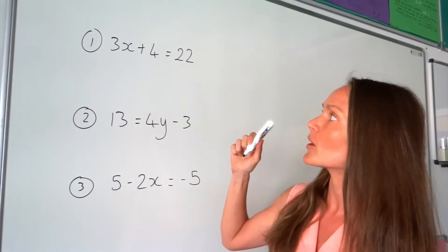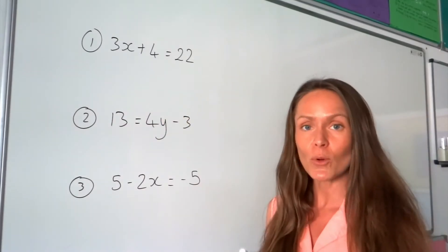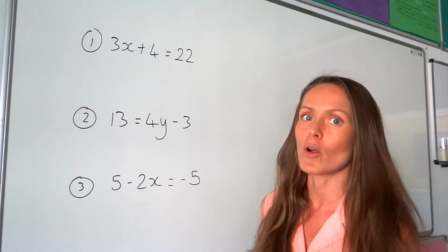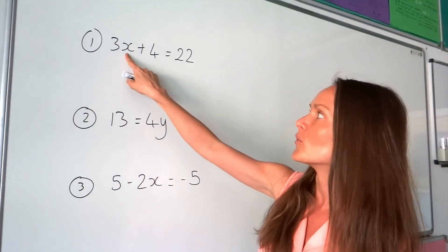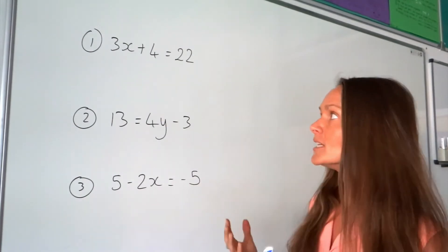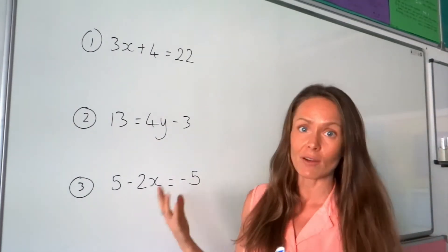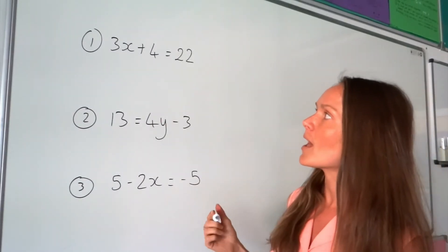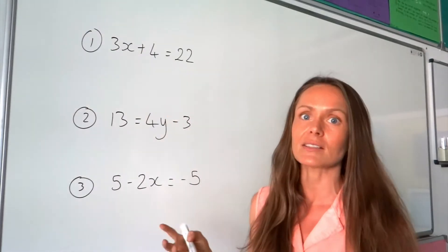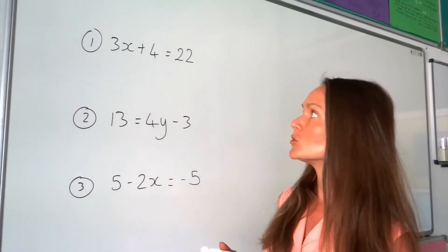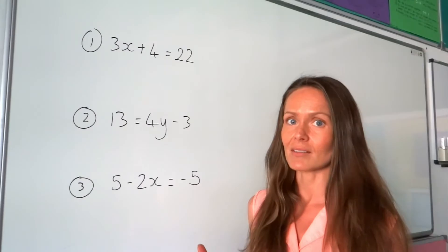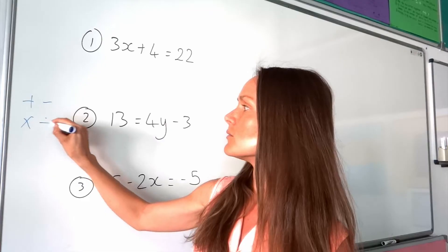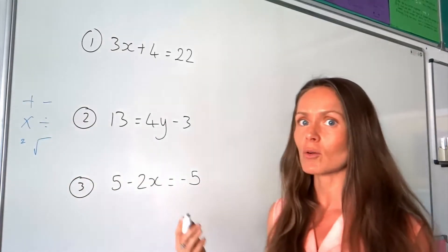So in the first one, we're going to be working out x. To work out the value of the unknown letter, you might be able to guess on the first one, but that method won't help you all the time. So we need a method that's going to work for every solving equation question. What we need to do is undo everything that's surrounding x until x is by itself. In order to do that, we need to do opposites. The opposite of adding is subtracting, the opposite of multiplying is dividing, and the opposite of squaring is square rooting, and so on.